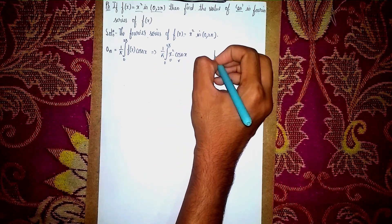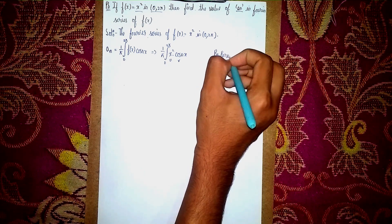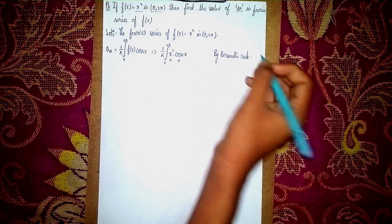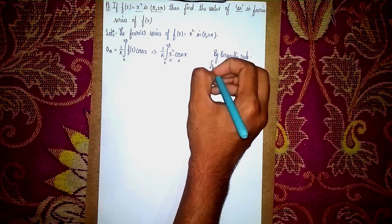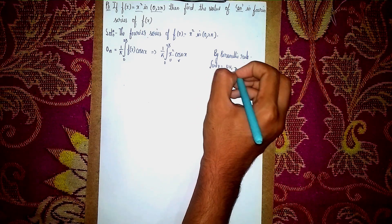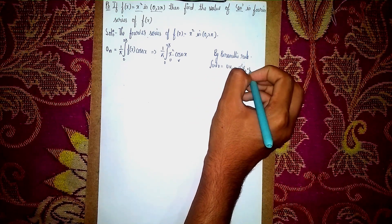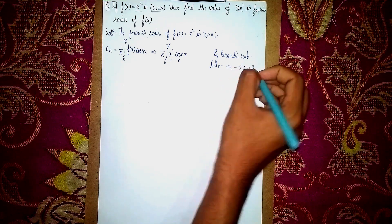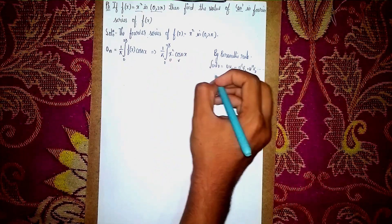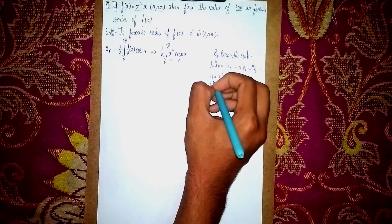By Bernoulli's rule, ∫u dv = u·v₁ − u'·v₂ + u''·v₃ − ... continuing until the differentiation terminates. Here u = x², so we differentiate u and integrate the trigonometric part repeatedly.